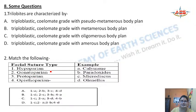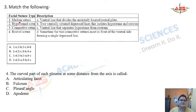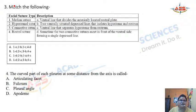Question 2: Match the following — facial suture types with their examples. Hypoparian, Gonadoparian, Protoparian, Opisthoparian — with examples Calymene, Paradoxides, Microdiscus, and Olenellus. Question 3: Match the following — facial suture types with their descriptions: Median suture, Hypostomal suture, Connective suture, Rostral suture.